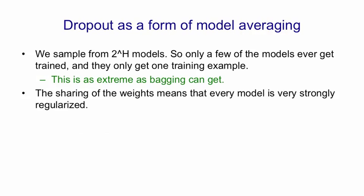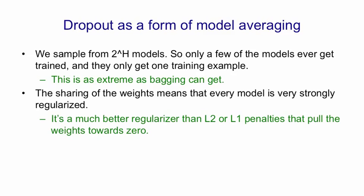The sharing of the weights between all the models means that each model is very strongly regularized by the others. And this is a much better regularizer than things like L2 or L1 penalties. Those penalties pull the weights towards zero. By sharing weights with other models, a model gets regularized by something that's going to tend to pull the weights towards the correct value.